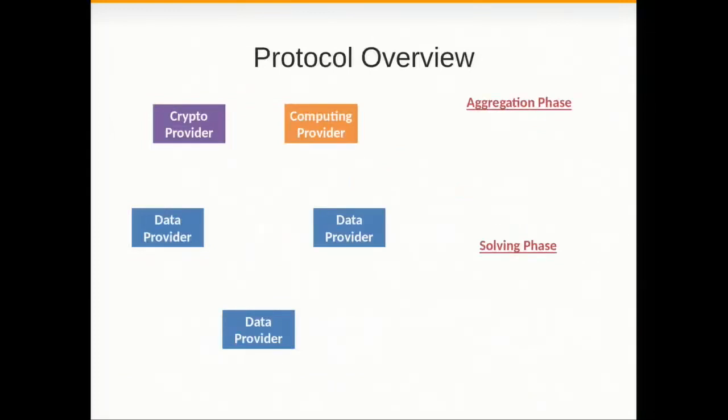Let's get an overview of the protocol. At least in this version of the protocol, we have in the paper, we rely on two external parties, the crypto provider and the computing provider, that will help in the computation while learning nothing about the data. The important assumption here is that these guys, the crypto provider and the computing provider, are non-colluding. This is sometimes referred in MPC as the two-server model.